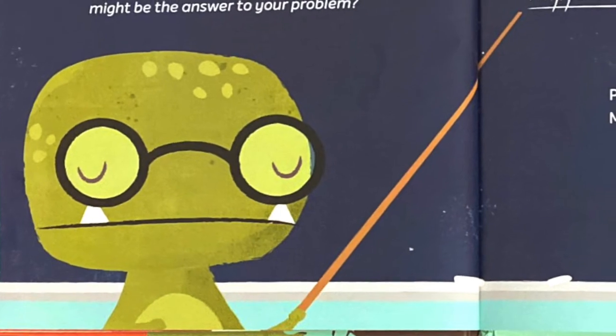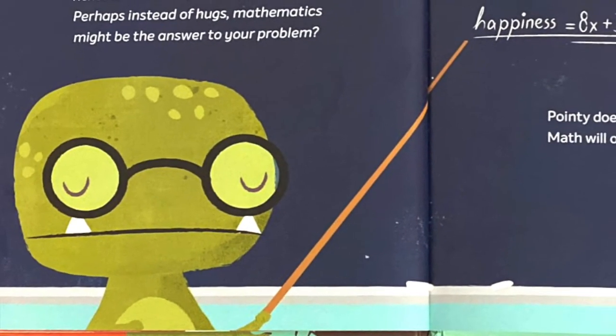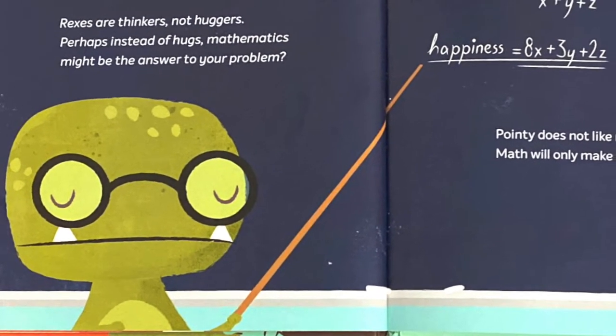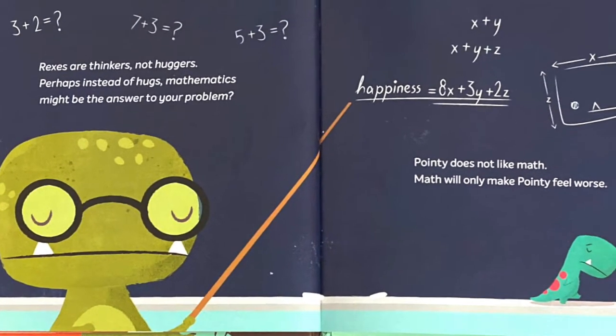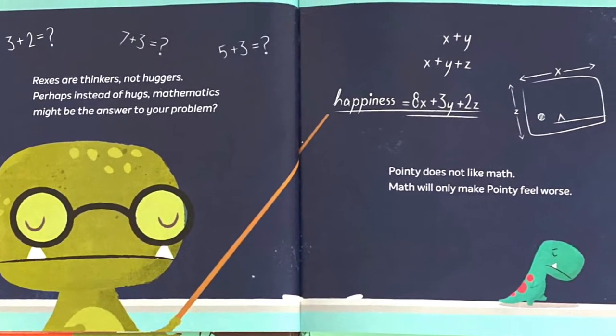Rexes are thinkers, not huggers. Perhaps instead of hugs, mathematics might be the answer to your problem. Pointy does not like math. Math will only make Pointy feel worse.